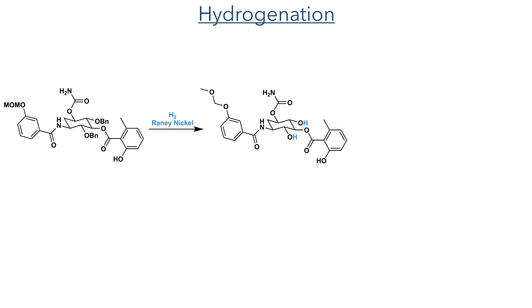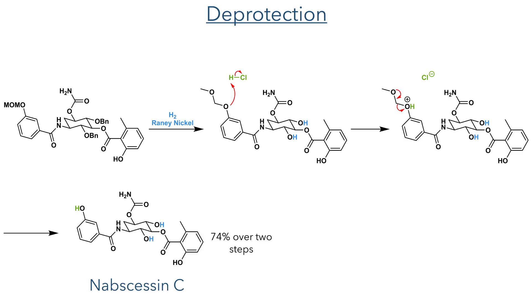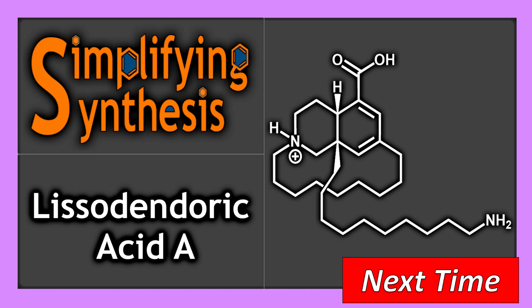With this ester now complete, all that remained was the final deprotections. The benzyl groups could be removed using catalytic hydrogenation over Raney nickel, and the MOM cleavage could be achieved using hydrochloric acid, to produce nabscessin C in a 74% yield over 2 steps. Well, that brings us to the end of this synthesis. Join me in the next video where we will look at the total synthesis of lasiodiplodin A.